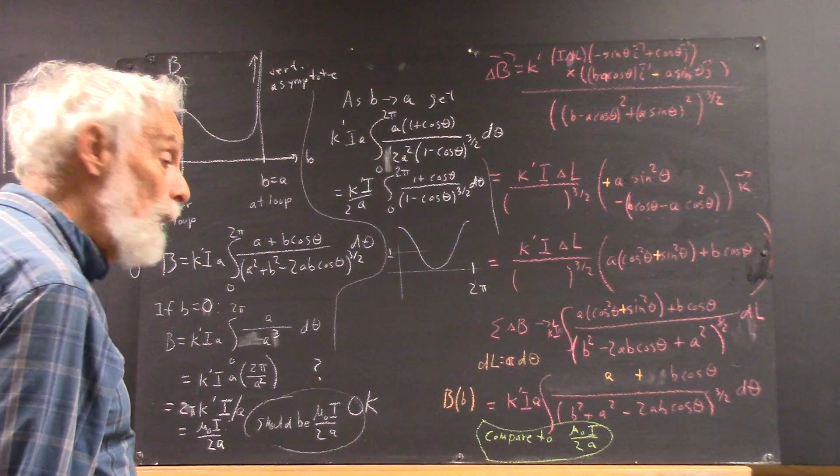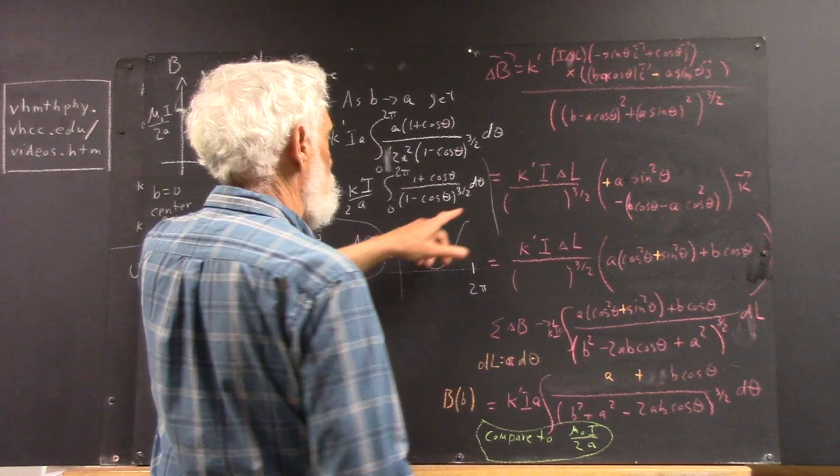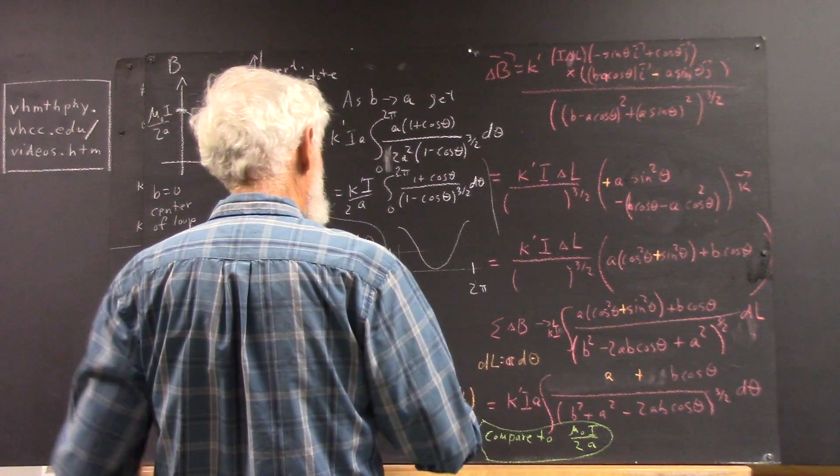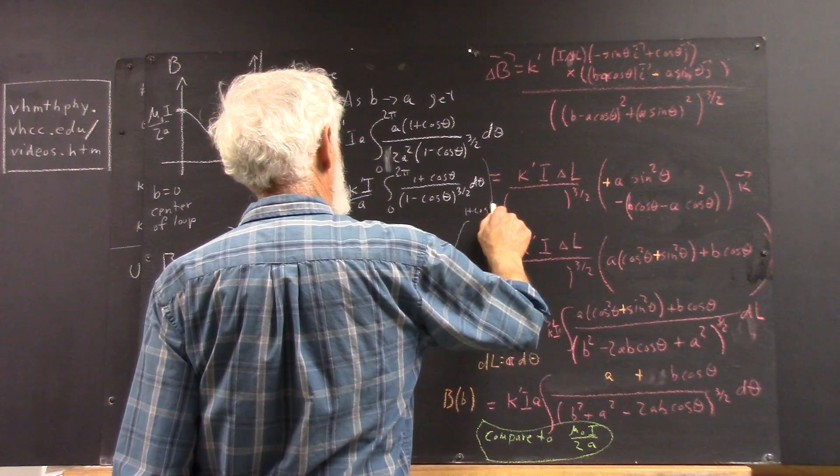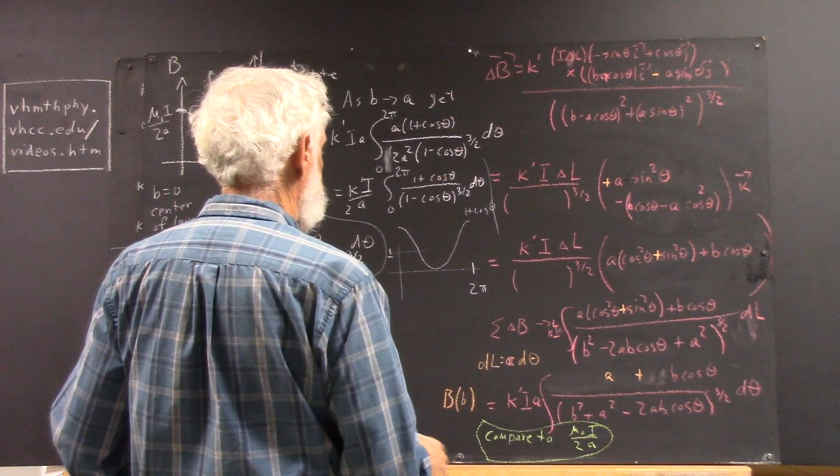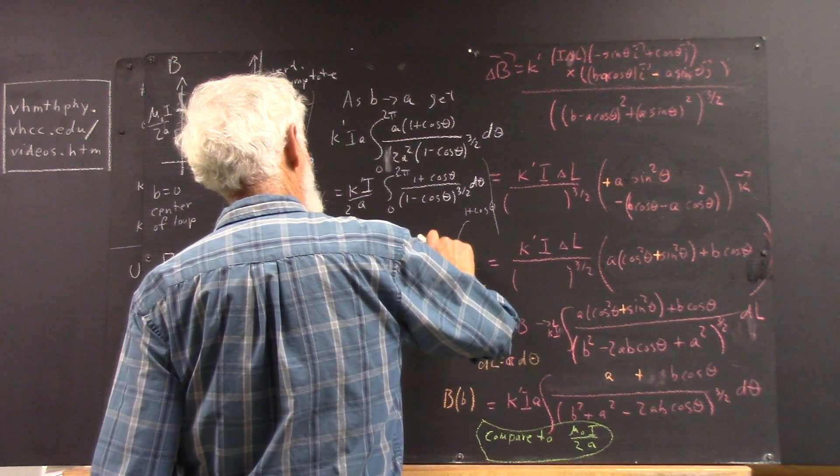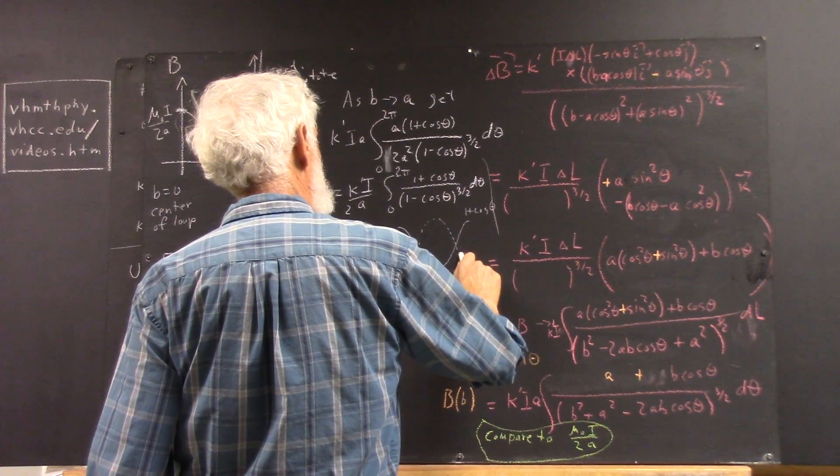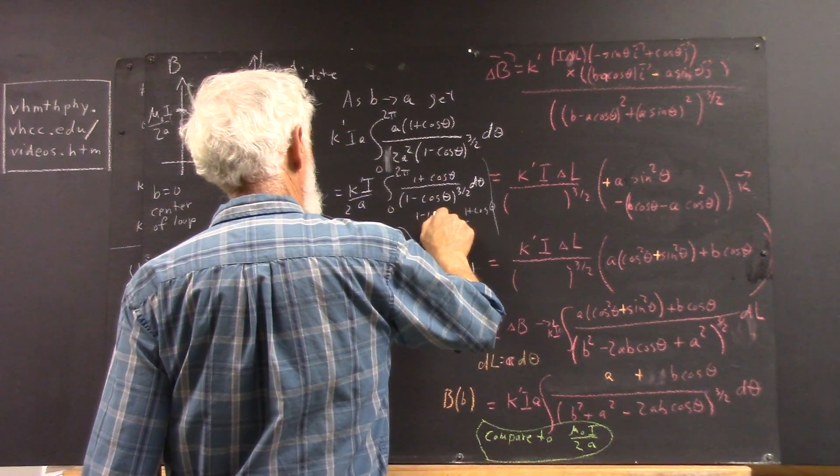And let's see the graph of 1 minus cosine theta. And of course, we've got to do the 3 halves power of that, but let's get 1 minus cosine theta first. Okay, so here's 1 plus cosine theta, and 1 minus cosine theta is going to start down here and go up to a maximum, and then come back down here. So here's 1 minus cosine theta.